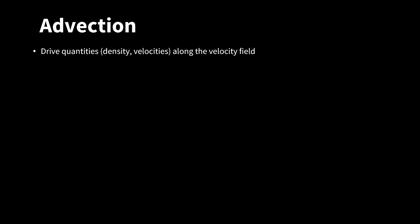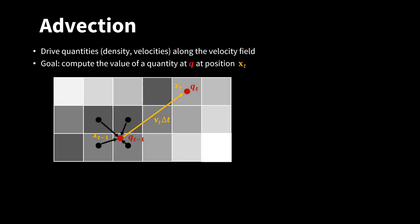The last step is the advection step. Here, we want to move quantities such as the density or the velocity components along the velocity fields stored in the grid. So let's assume we have a quantity Q. This could be the density value or a velocity component. If it's a density, then it is stored at the center of the cells. If it's a velocity component, then it is stored at the center of the faces of the cells.